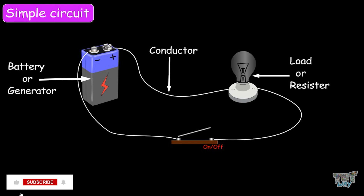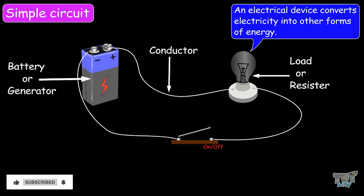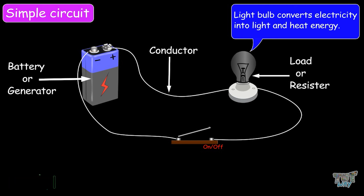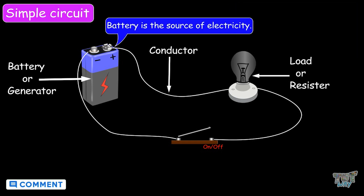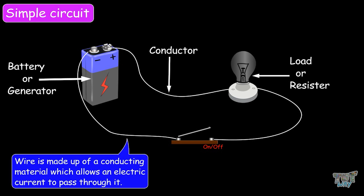Here we have a light bulb as an electrical device. An electrical device converts electricity into other forms of energy. For example, the light bulb converts electricity into light and heat energy. The battery is the source of electricity. The wire is made up of a conducting material which allows an electric current to pass through it — for example, copper wire.